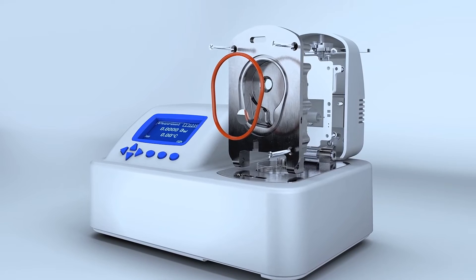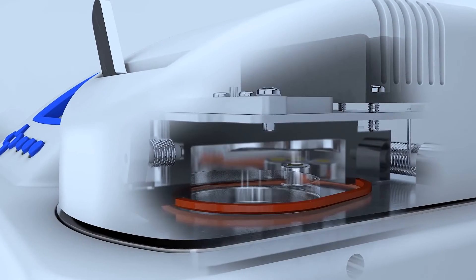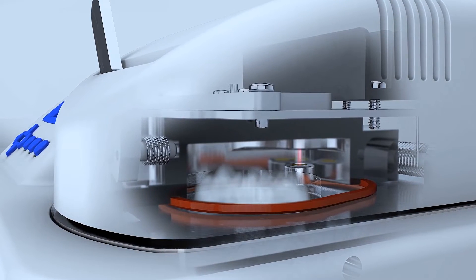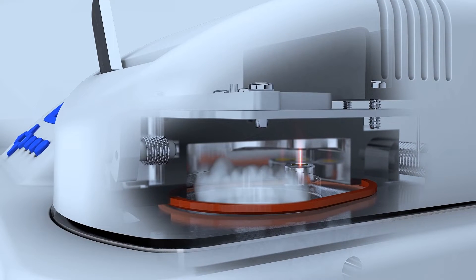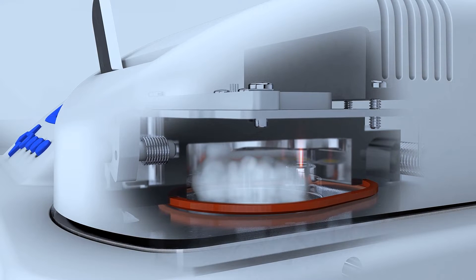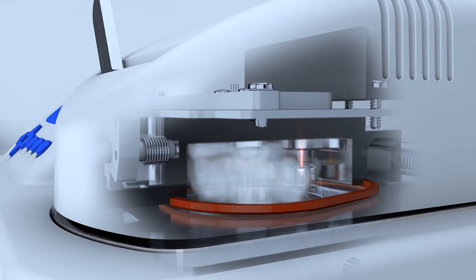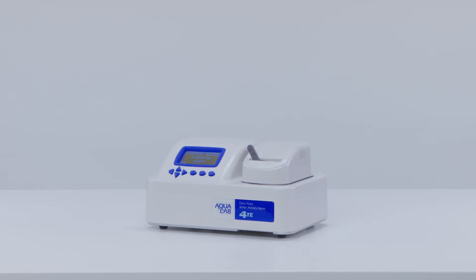To understand how it works, let's look at the inside of the sample chamber. When a sample is put into the chamber and the block is sealed, it comes to vapor equilibrium. Water molecules enter the air above the sample, and then the mirror is chilled until dew forms. The chilled mirror method is a primary measurement method, and it's the fastest, most accurate way to measure water activity.